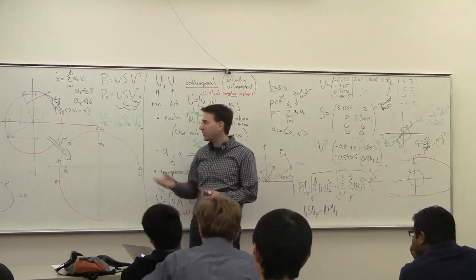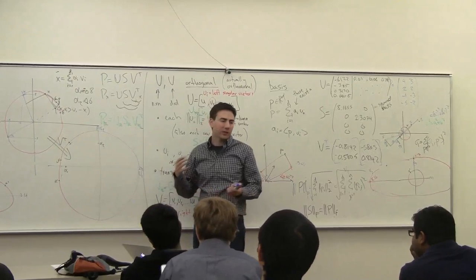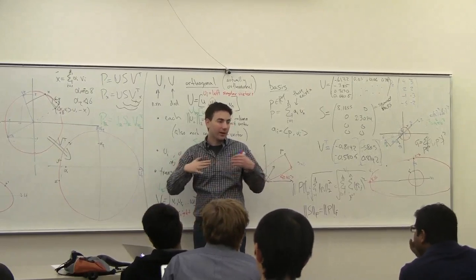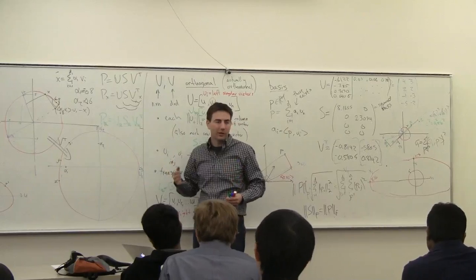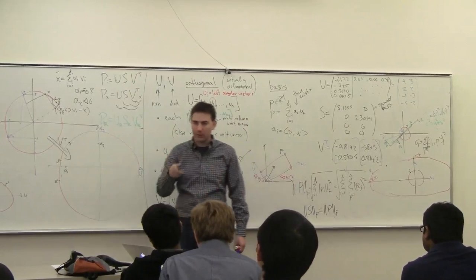And so whenever you have high-dimensional data, this should really be one of the first things you think of doing to try and simplify and find the kind of the lower-dimensional subspace. And it's really easy to do if you have, you know, if you're in bad numbers.